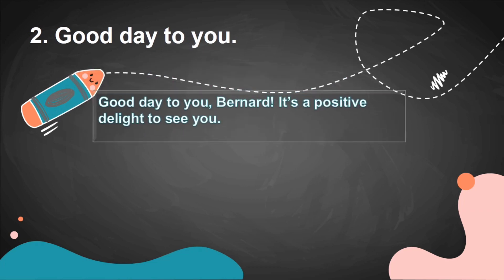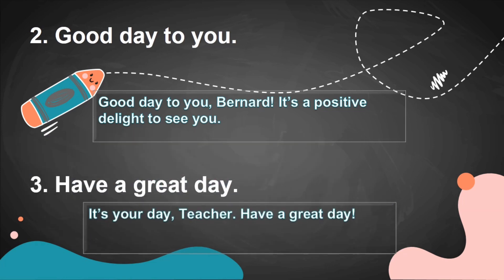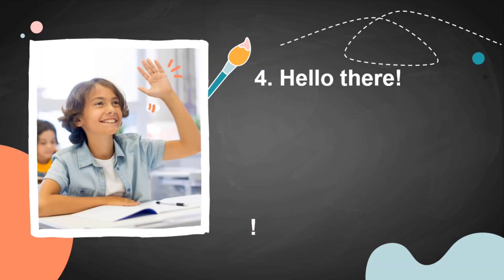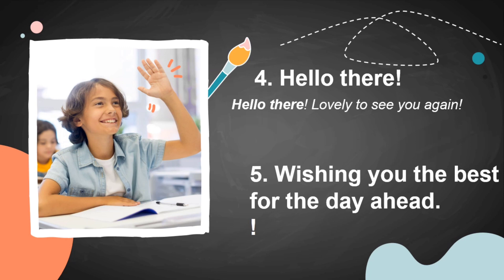Third is 'Have a great day.' For example: 'It's your day, teacher — have a great day!' Next, fourth: 'Hello there.' For example: 'Hello there — lovely to see you again!' You can see the happiness in this phrase. Teachers can use such phrases to create excitement and a smile on students' faces.